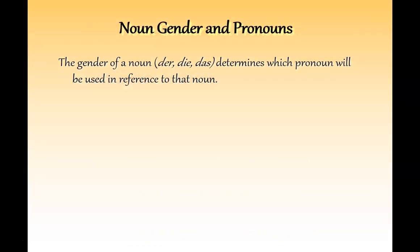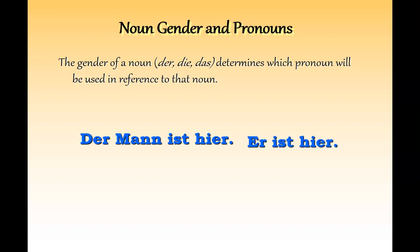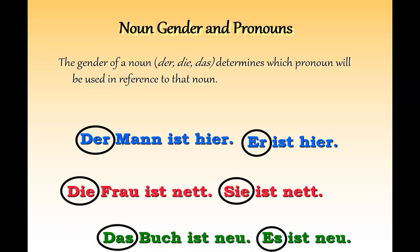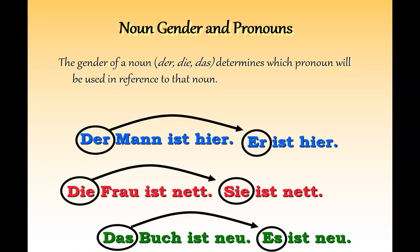Because every noun has a gender, there are also pronouns that all mean 'it.' 'Der Mann ist hier' — 'the man is here' — becomes 'Er ist hier' — 'he is here.' 'Die Frau' uses 'sie,' and 'das Buch ist neu' — 'the book is new' — becomes 'es ist neu.' So 'der' has 'er,' 'die' has 'sie,' and 'das' has 'es.' If you look at them closely, they're quite similar: 'der/er' both end in E-R, 'die/sie' both contain I-E, and 'das/es' both carry the S. Those may be helpful tricks to remember.